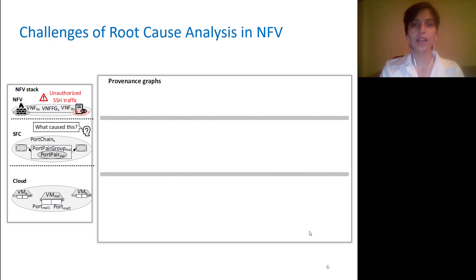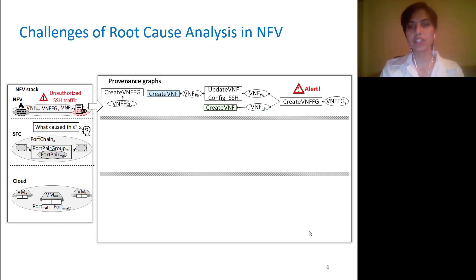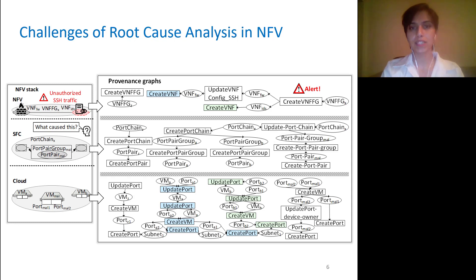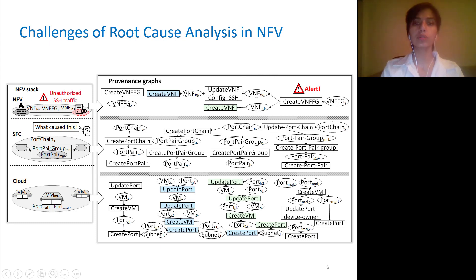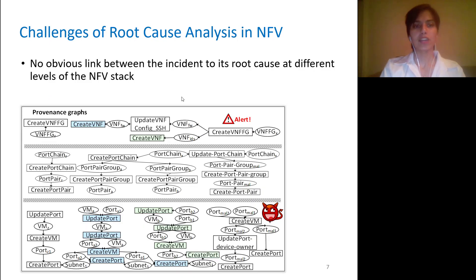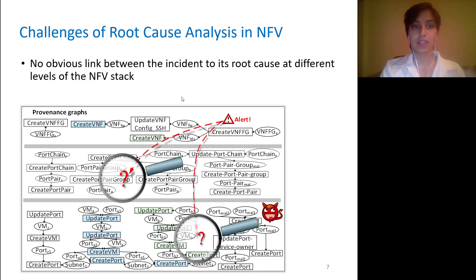To investigate this incident, the analyst may apply some existing provenance-based solution, which would establish the relationships between operations at different levels of the NFV stack. Because the incident was detected at the NFV level, the analyst may start by going through the provenance graph at the NFV level. It would show that this virtual IDS detected the incident, and according to the provenance graph, it was included in VNFFGX and was preceded by this virtual firewall configured to filter unauthorized SSH traffic. So based on all the analyst can see on this provenance graph, he cannot explain the root cause — the incident shouldn't have happened. The analyst then starts investigating provenance graphs at other levels of the NFV stack. However, there is no obvious link between the incident and its potential root cause at different levels.